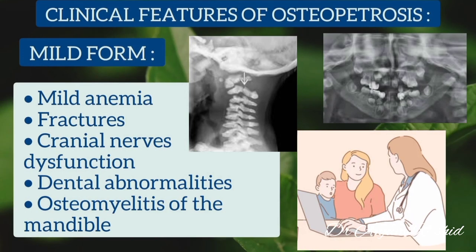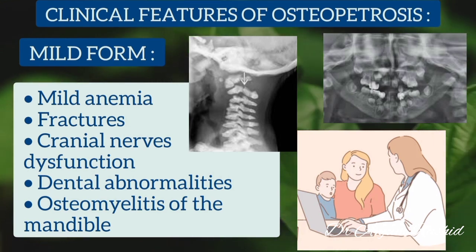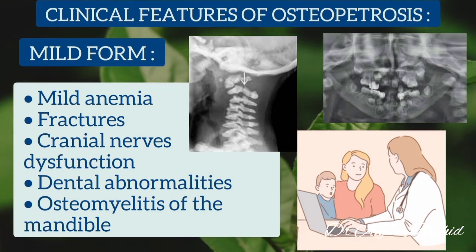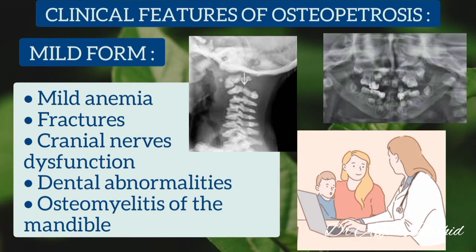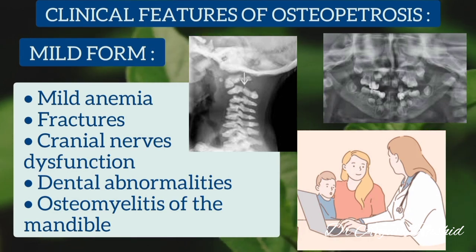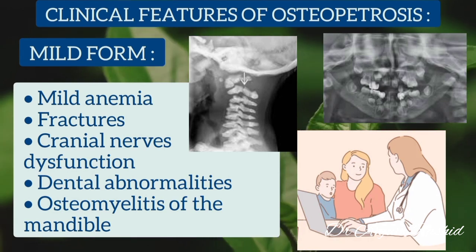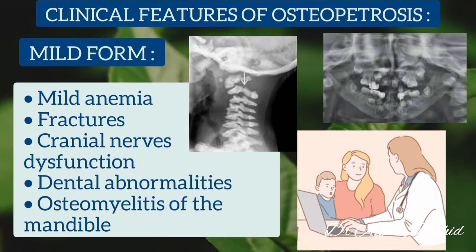The mild form of osteopetrosis usually presents in later childhood and manifests as mild anemia, fractures, cranial nerve dysfunction, dental abnormalities, and osteomyelitis of the mandible.